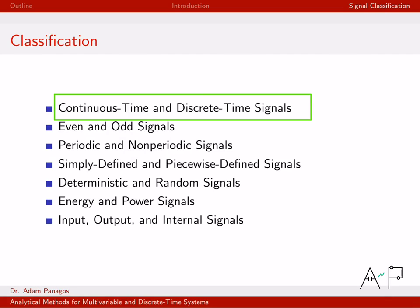In this set of videos we're going to work through a list of signal properties. The first property we're going to talk about is continuous time and discrete time signals.